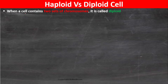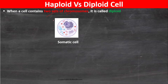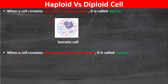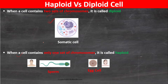When a cell contains two sets of chromosomes, it is called diploid. For example, somatic cells are diploid cells because they contain two sets of chromosomes. Whereas when a cell contains only one set of chromosomes, it is called haploid.